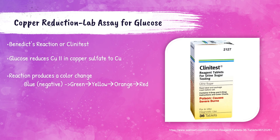When urine reacts with a Clinitest tablet, it produces varying colors: blue, green, yellow, orange, and red. A blue color means the test is negative for galactose, while the other colors indicate certain percentages or ranges of galactose present. I have a video on my channel of me actually performing a Clinitest, which I will link below in the description so you can see the step-by-step procedure.